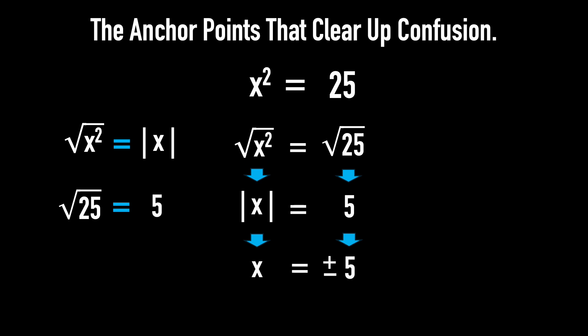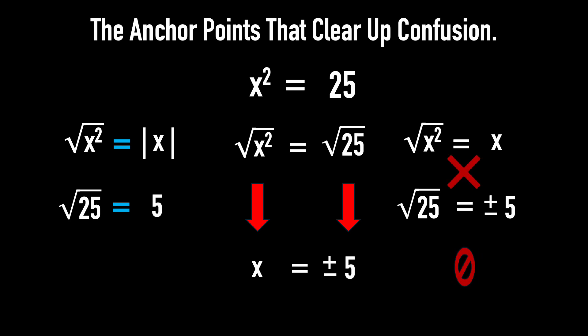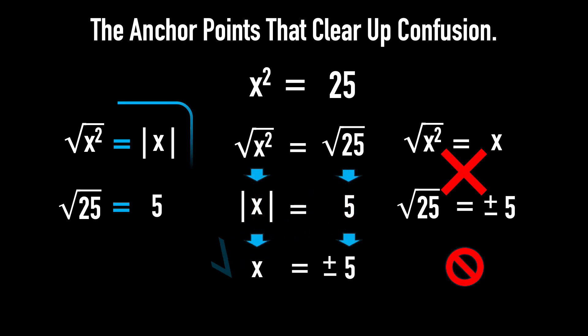Now, here's the important part. If you only look at the first and the third lines without referring to the anchor points, you might fall into the misconception that the square root of x squared equals x, and the square root of 25 equals either 5 or negative 5. No, that's a misconception. Let's clear it up and anchor these points in your mind. They'll help clear up confusion and keep you confident and consistent.